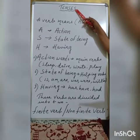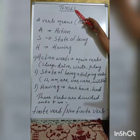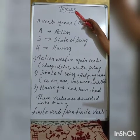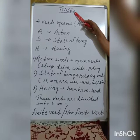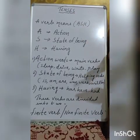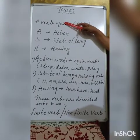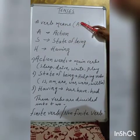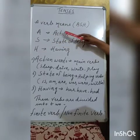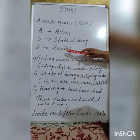Tenses is nothing but the ability of verbs to situate themselves in time. So we have verbs and then we have time. To understand tenses, let us understand a verb first. A verb means ASH. A stands for action, S for state of being, and H for having.